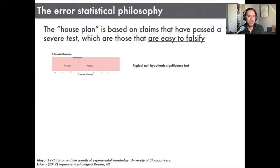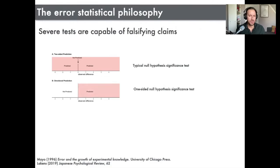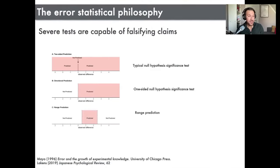When you're reading papers, you might find that claims are actually very difficult to falsify — there are different levels of how difficult something is to falsify. A typical null hypothesis significance test simply asks: is there a difference or not? There's a lot of room for error there. Once you start going for a one-sided test, you're making something a little bit easier to falsify, because you're not just saying there will be a difference one way or the other — you're calling that it will be an increase or a decrease specifically.